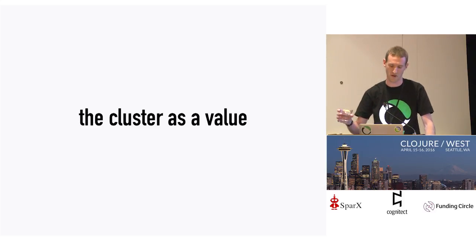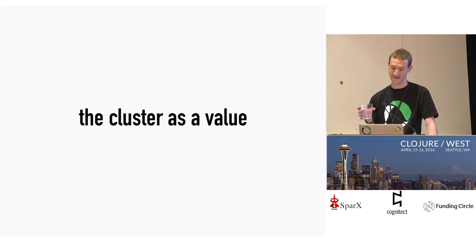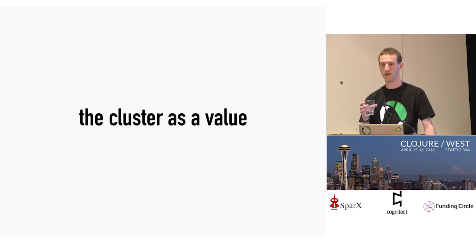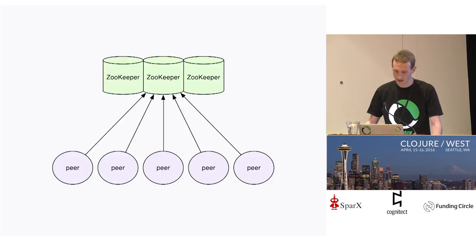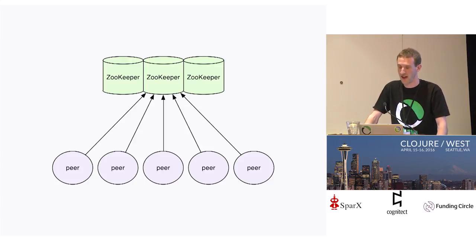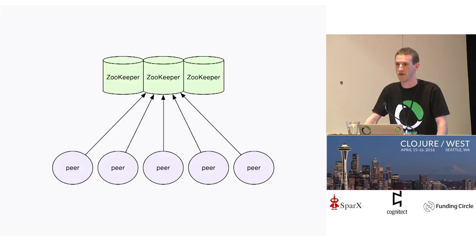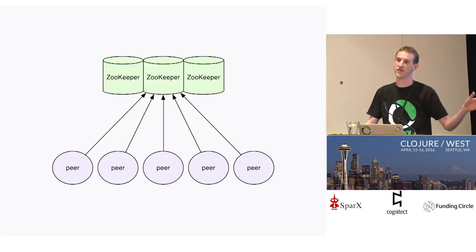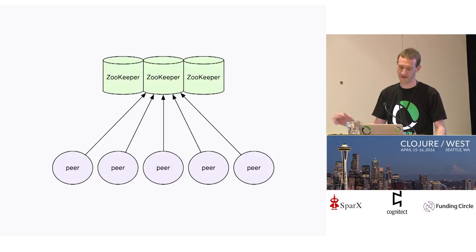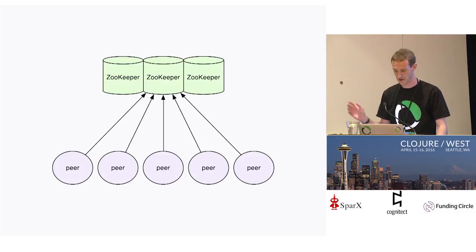What we ended up with is what I like to call the cluster as a value. Onyx is now a masterless system, oriented around the idea of an immutable append-only log with a well-defined set of transition semantics. Onyx's design is composed of peers — the equivalent of workers — and ZooKeeper. That's it. There's no master in Onyx. That said, there is a master in clustered ZooKeeper, so it's not fully peer-to-peer, but Onyx itself doesn't have a centralized coordinator.